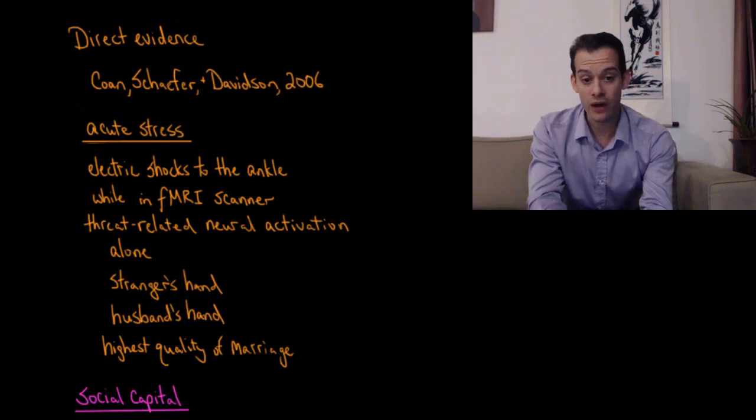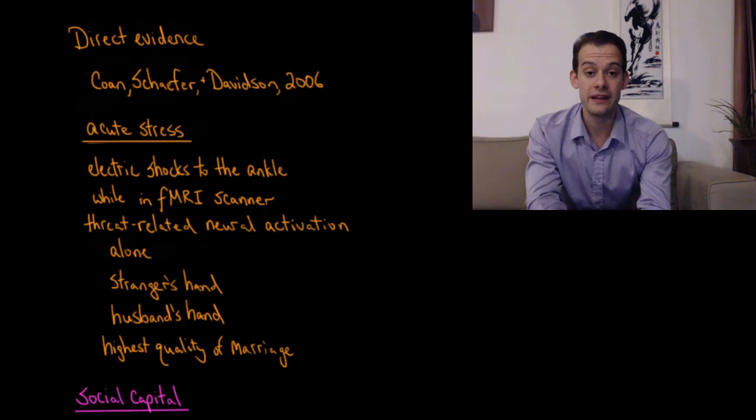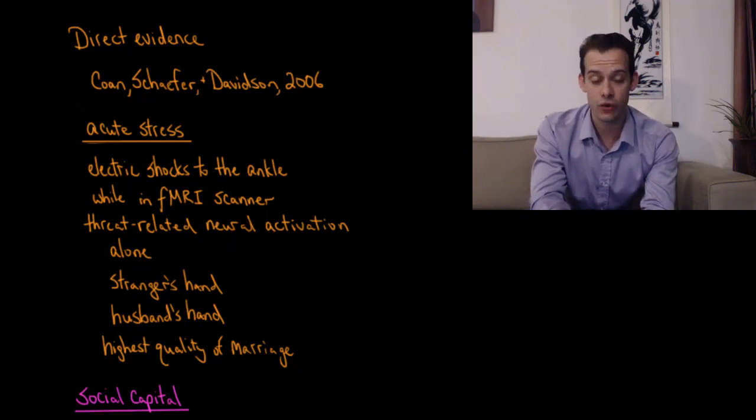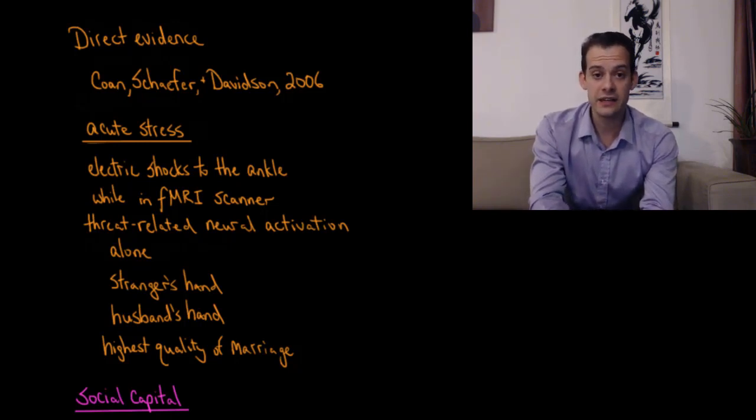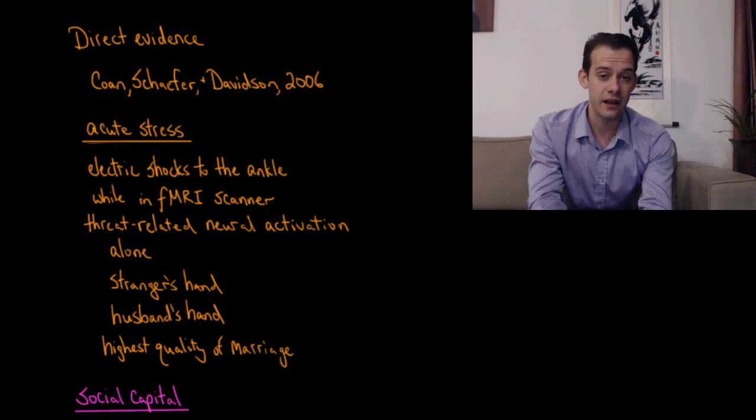And then while the woman is in this fMRI scanner the researchers were going to look at the threat related neural activation. So activation in brain areas like the hypothalamus and the insula to see her response to this stressor. And then the women in the study were in different conditions. In one case they were alone.